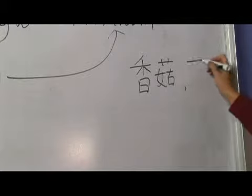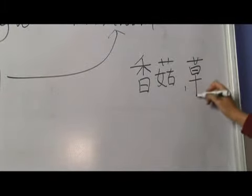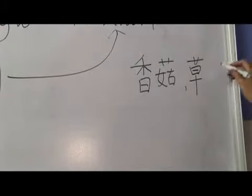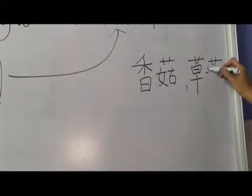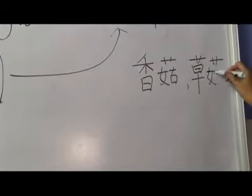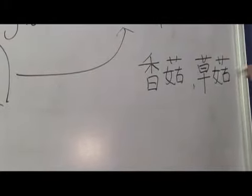We also have caogu. Cao means grass, so caogu means straw mushroom.